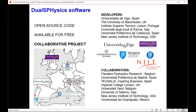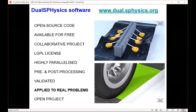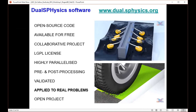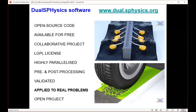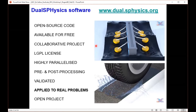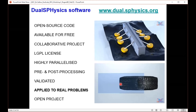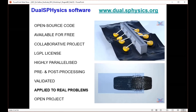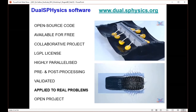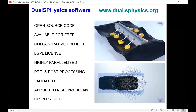DualSPHysics is open source, available for free, highly collaborative, and a multi-institution project involving the University of Vigo in Spain, Manchester, Lisbon, the University of Parma in Italy, UPC in Barcelona, and the New Jersey Institute of Technology, plus many other collaborators. We try to apply it to real problems — for example the wave star energy device showing a lot of fluid-structure interaction, and an aquaplaning simulation. Our aim is to produce an engineering tool useful for engineers to analyze their problems.